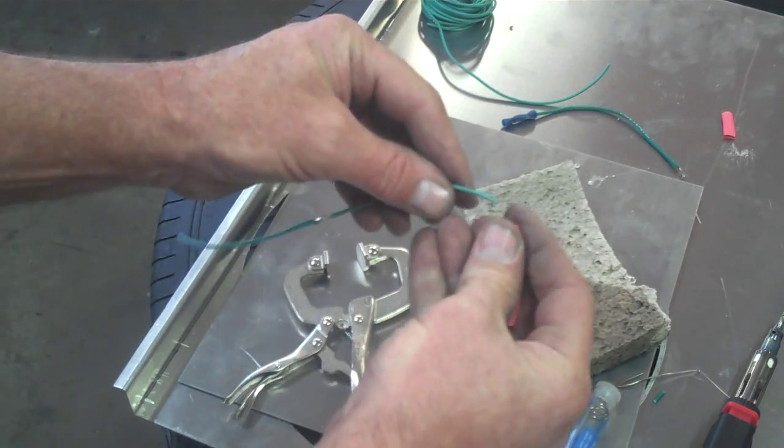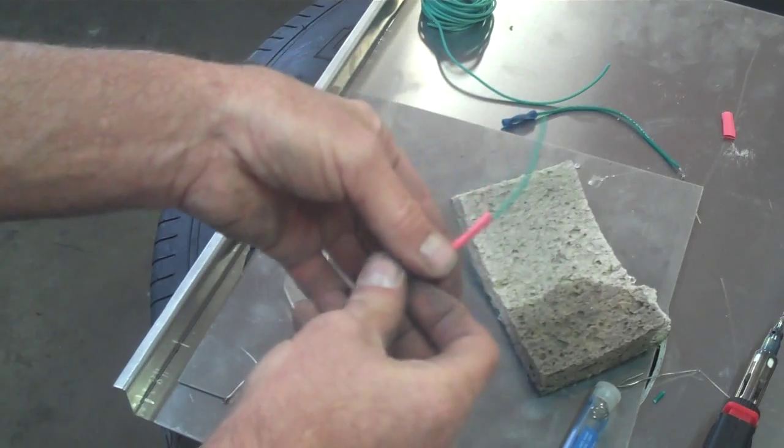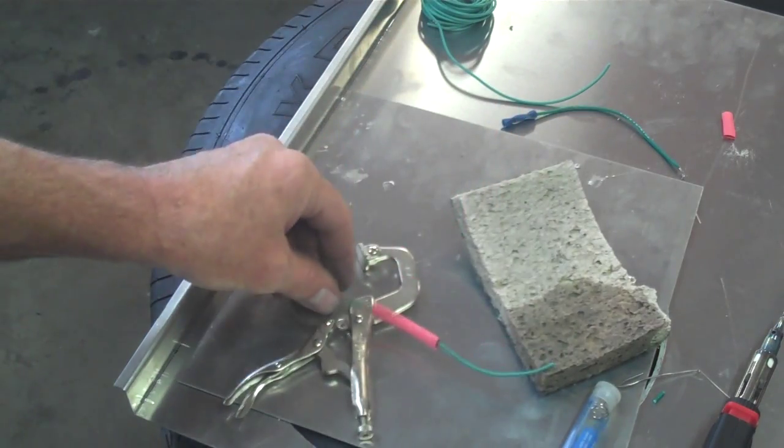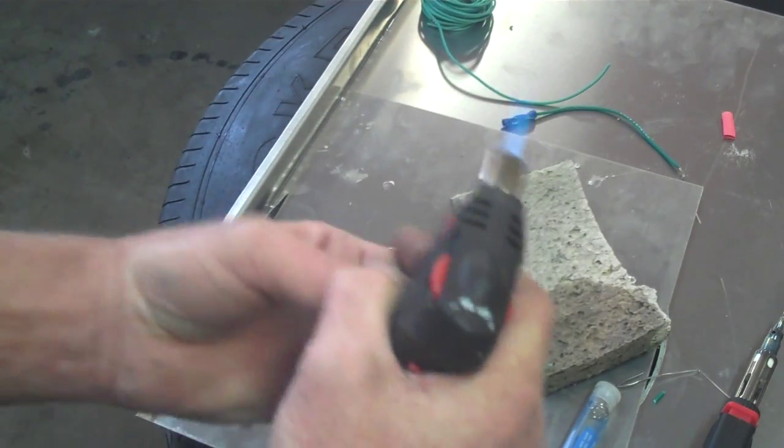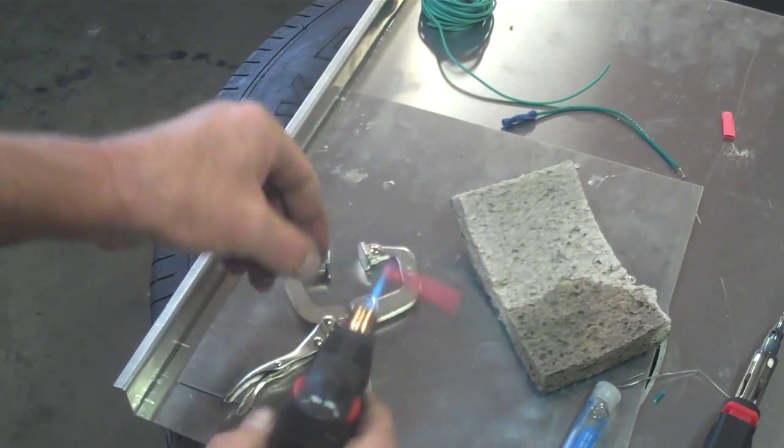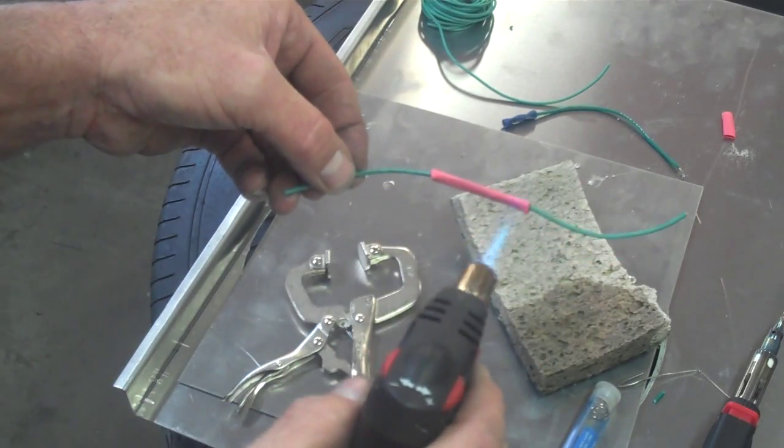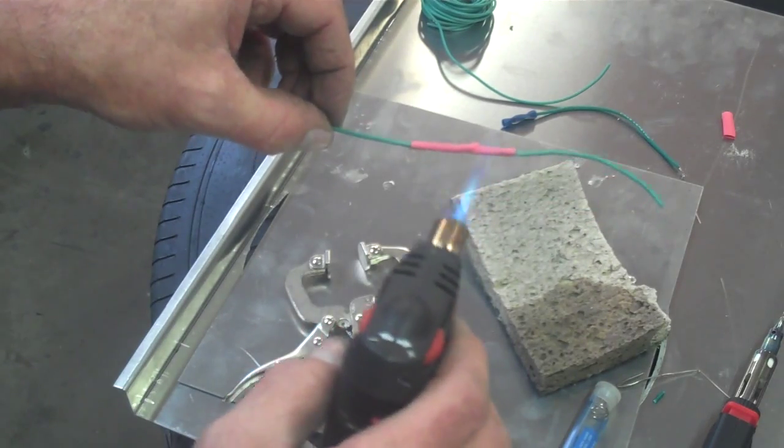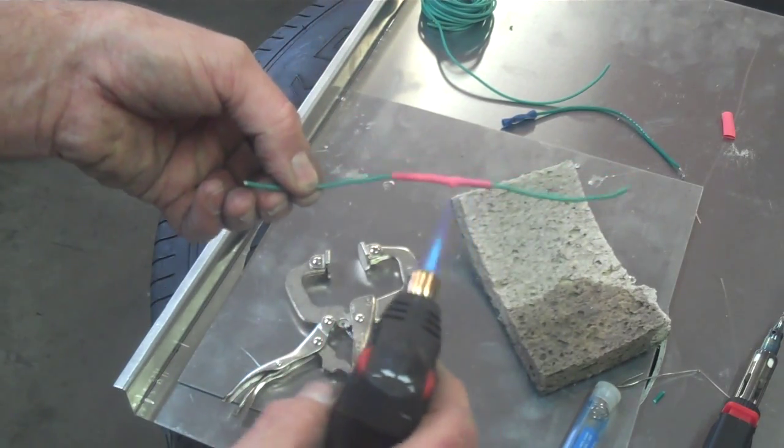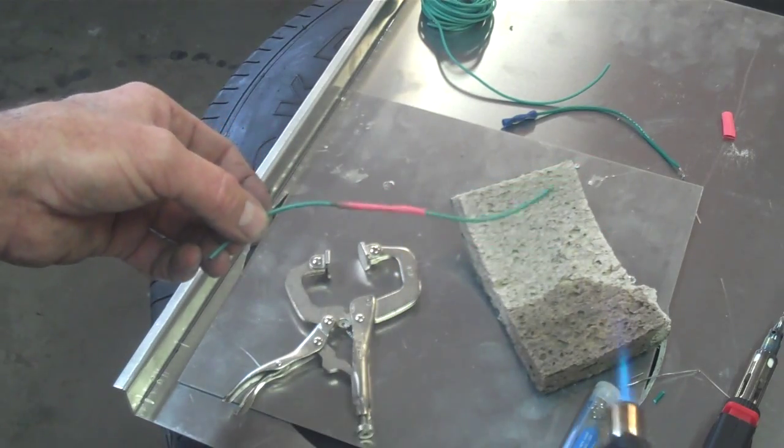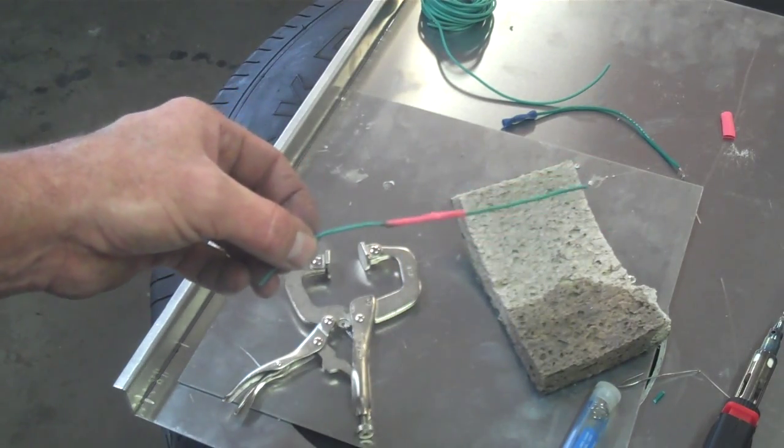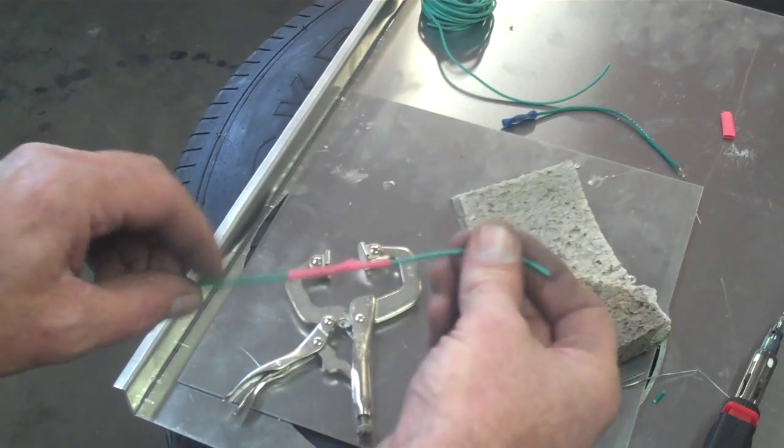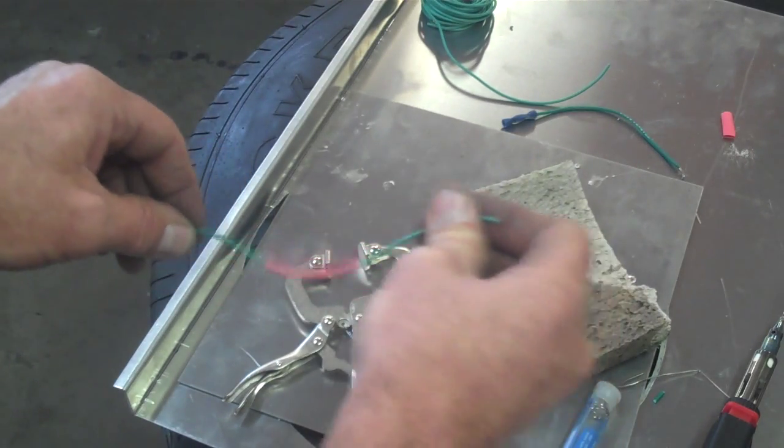Now, I'm going to take a little bit of shrink tubing, put that over my connection, melt the shrink tubing down. Shrink tubing is going to insulate against moisture, and it's also going to insulate against shorts. There we go. One soldered wire. Not too bad.